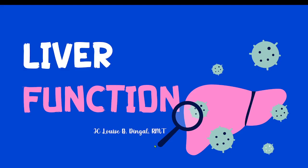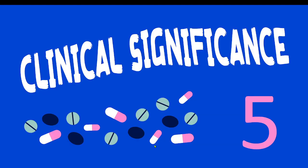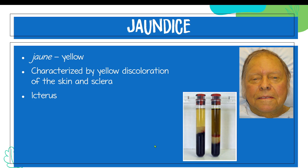Let us continue with our discussion regarding liver function. The only thing left to discuss is clinical significance. The very famous disease or condition related to bilirubin is jaundice. Jaundice comes from the French word 'jaune' which means yellow, and this condition is characterized by a yellow discoloration of our skin including our sclera. One related term for yellow discoloration of our serum or plasma is icterus, and we describe a blood sample with such discoloration as an icteric sample, which is related to having an elevated bilirubin level.